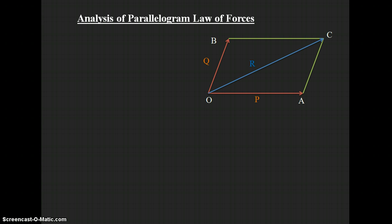We represent the angle between the two forces P and Q as alpha. Next, draw a vertical line from point C that is perpendicular to the horizontal line OA (which represents force P). Extend OA until it intersects the vertical line drawn from C.